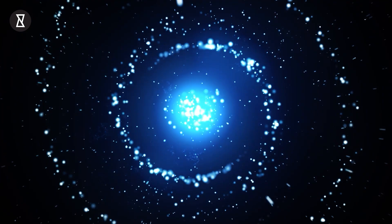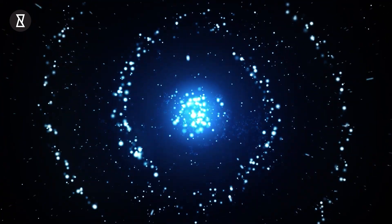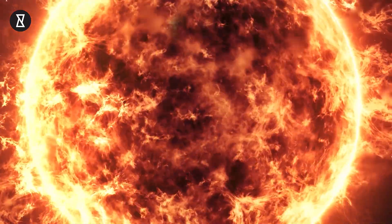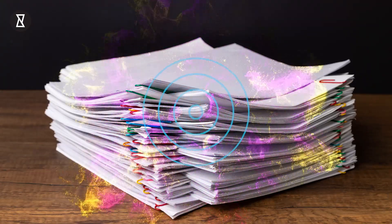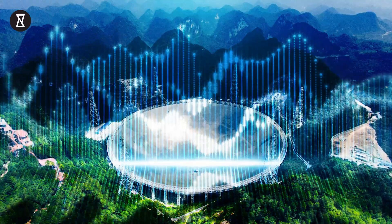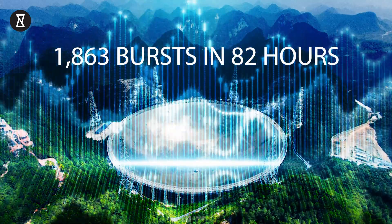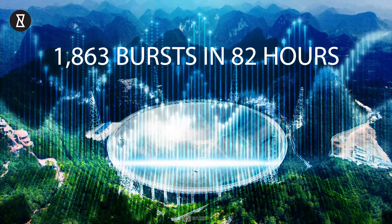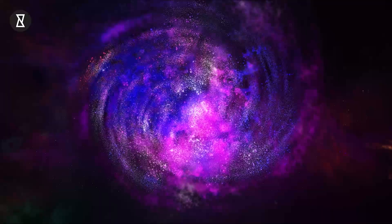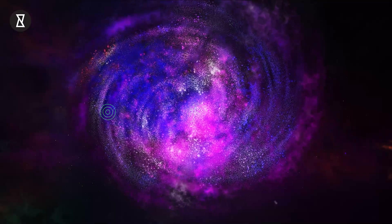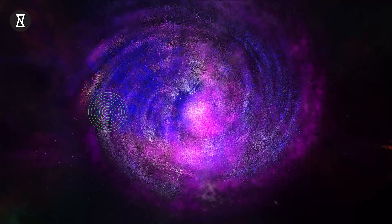Mysterious fast radio bursts release as much energy as the sun pours out in a year, and newly published research has deepened the mystery around them. Using a huge Chinese telescope, the team detected 1,863 bursts in 82 hours over 54 days from an active fast radio burst source called FRB 2020-1124A.